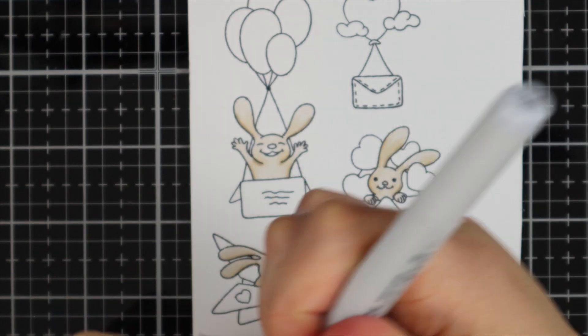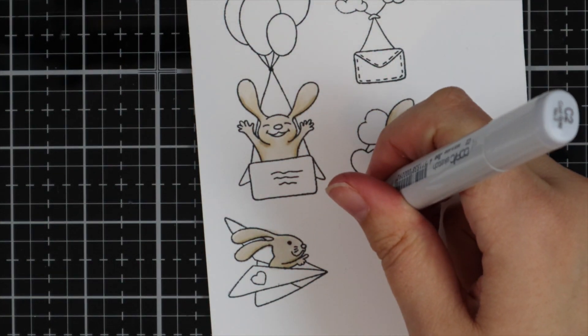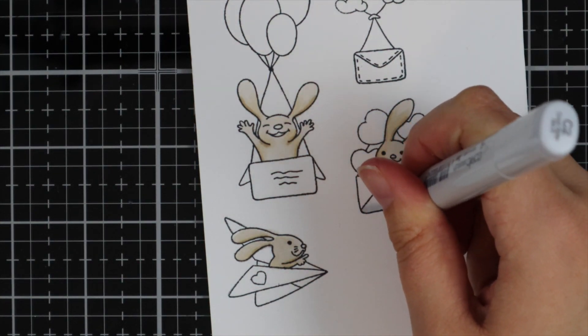And then for the little envelopes, I've only used two markers, so that's C2 and C0.